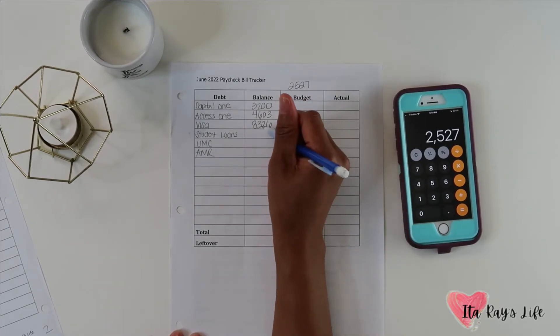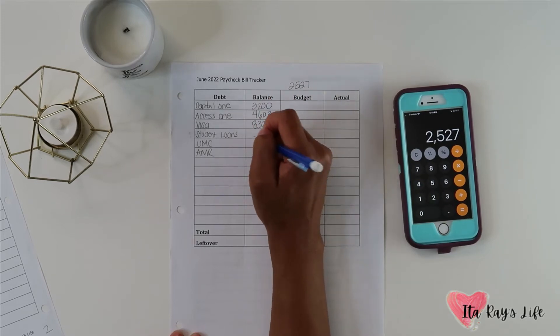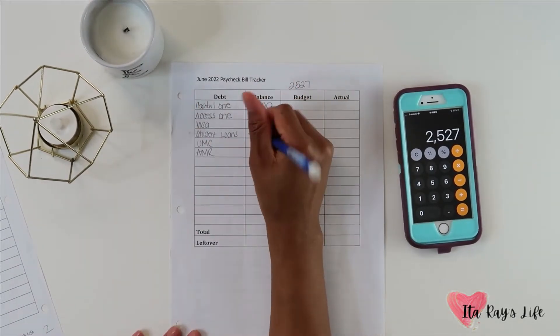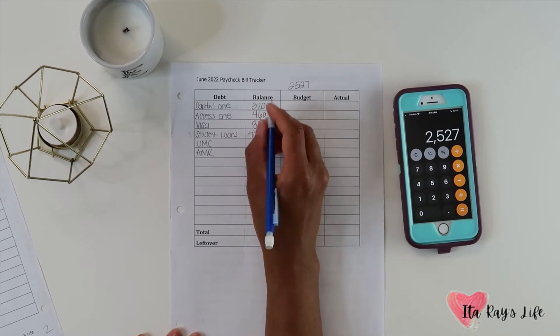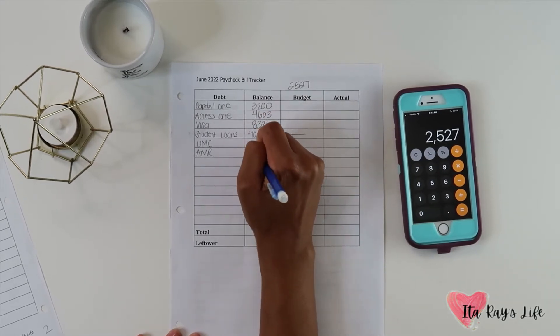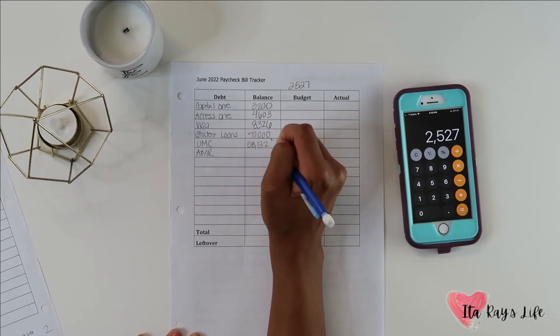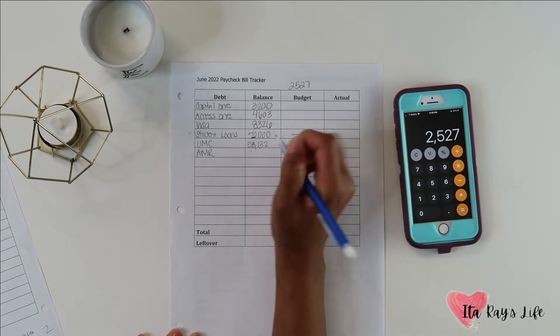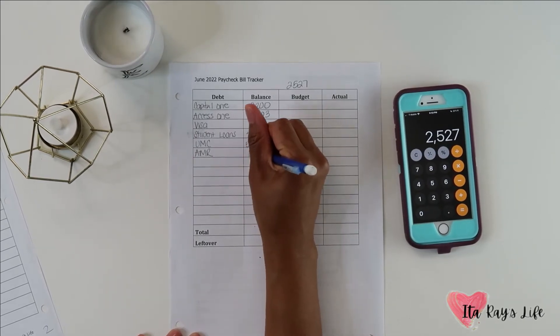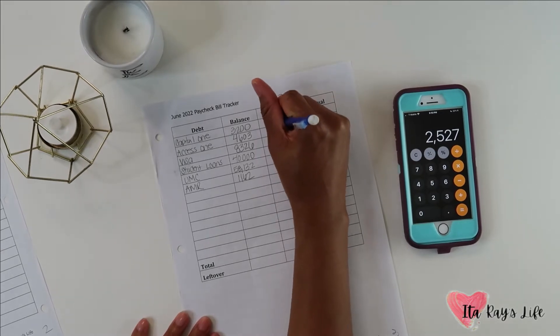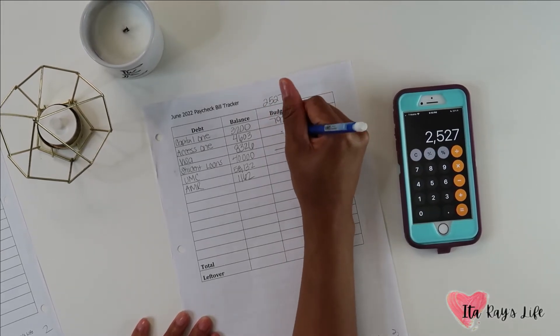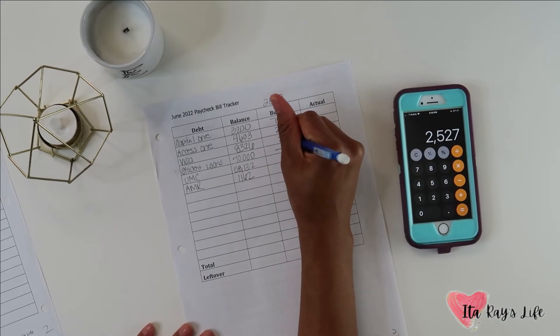Once I actually get it I will go back in there and correct it. Student loans is gonna be $40,000. You know what, I'm gonna take this out because I'll just leave it. $40,000 is what it's gonna be and I'm not gonna budget anything for that. So let me cross that out right now. UMC is $58,137 and AMR is $1,162. For capital one I am actually going to budget $792. For access one I am going to budget $280. For visa I am going to budget $264, UMC $100.